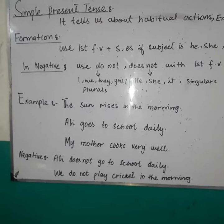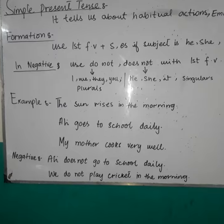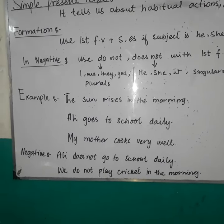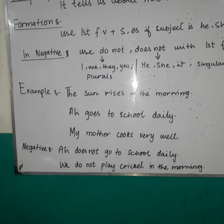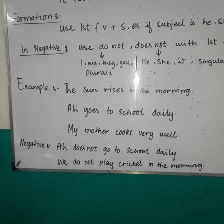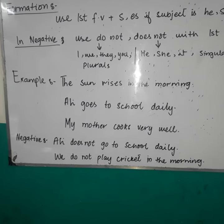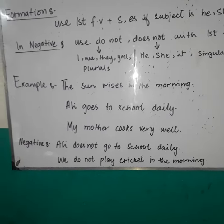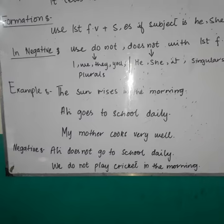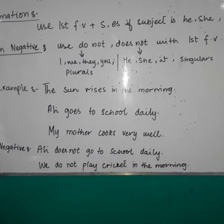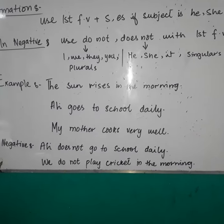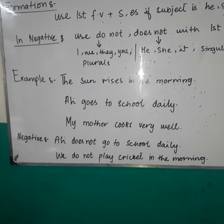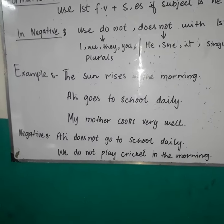Let's see its examples. 'The sun rises in the morning' — it's a habitual action. 'Ali goes to school daily' — we use es with go. 'The mother cooks very well' — we use s with the first form of verb.